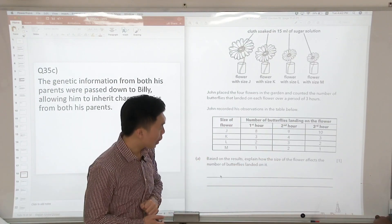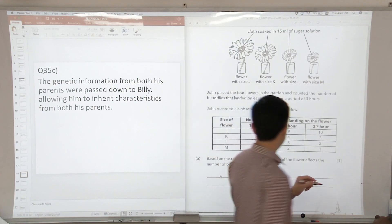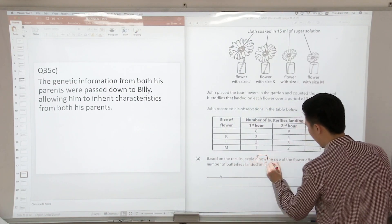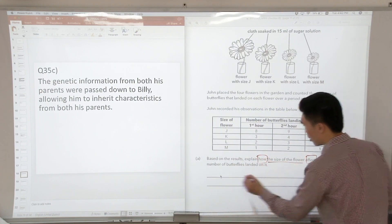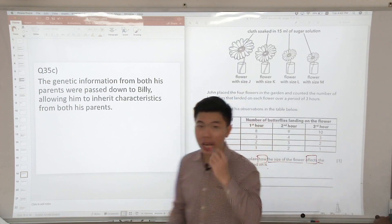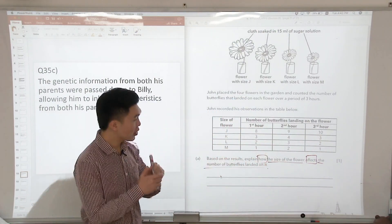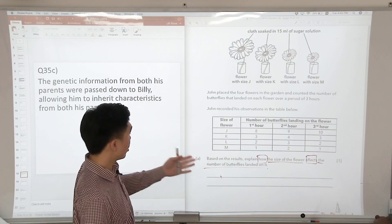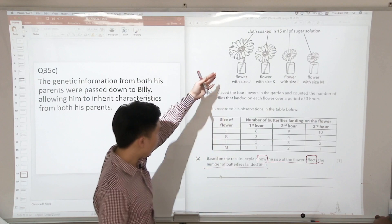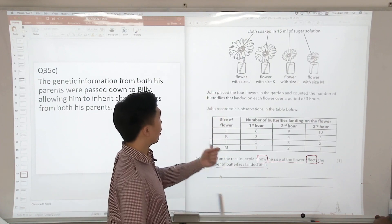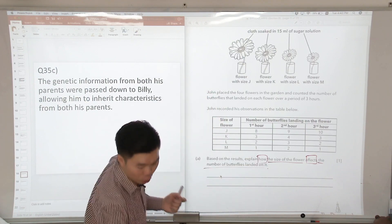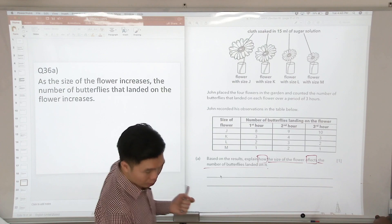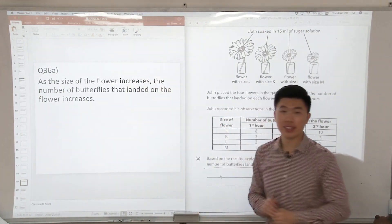So based on the results, explain how, same thing - keyword - put a box around how something affects something. So when we are answering, we are going to use the exact variables: how the size affects the number of butterflies landing on it. So we say as the size of the flowers increase, the number of butterflies landing on the flower increases. This is how we would phrase our answer.